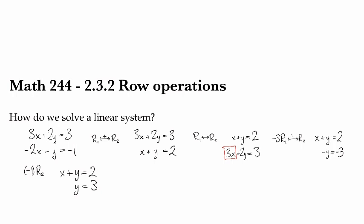And now I can subtract this, so I can do minus 1 copy of row 2 added on to row 1, and I end up with x equals minus 1, y equals 3. And I've solved my system. There's our answer.